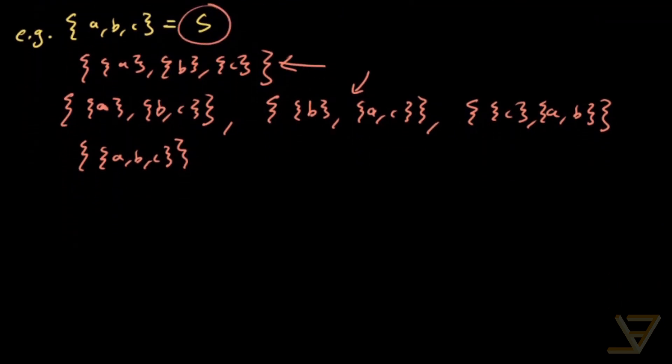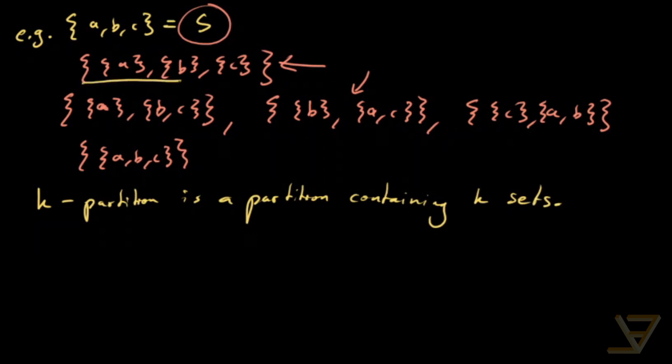What we are going to be looking at are k-partitions. A k-partition is a partition containing k sets. So this one here is a three partition. This one, this one, and this one are two partitions. And this one is a one partition.